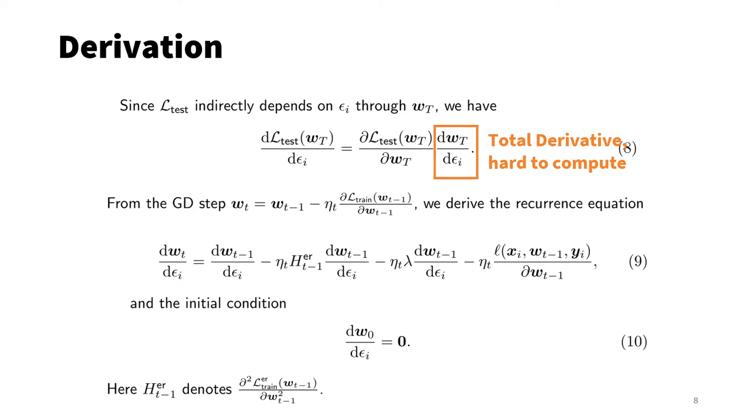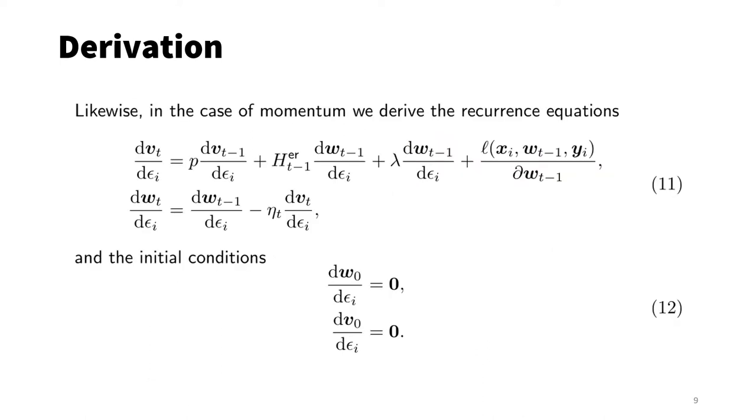Note that we have introduced a Hessian term in equation 9. This is because the gradient term is a function of W_{t-1}. So when we compute the derivative of this gradient term against W_{t-1}, this will lead to a second-order derivative. Under SGD with momentum, things are slightly different. We now have two recurrence equations, one for the total derivative of the momentum term v, and one for the model parameter w. These are shown as the equation group 11. For initial conditions, again, the initial momentum term v_0 does not depend on epsilon i. So we have the additional initial condition, dv_0 over d epsilon i being 0.